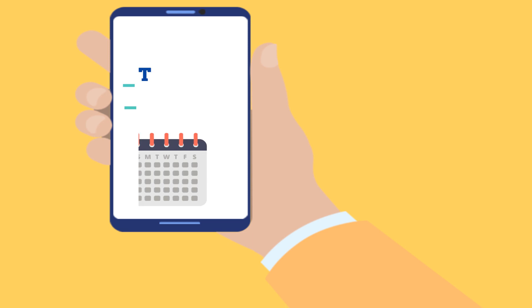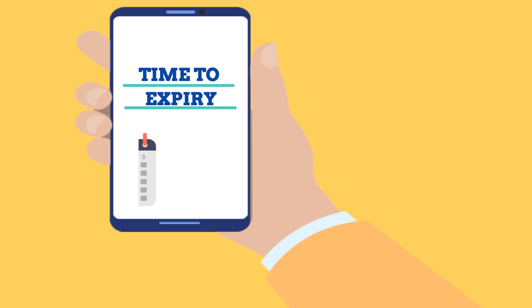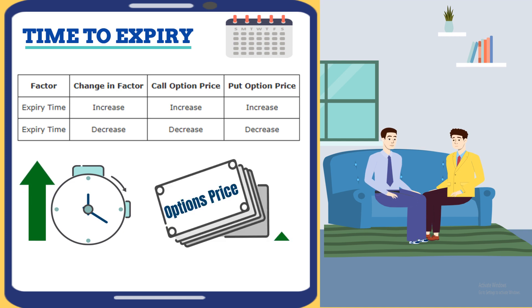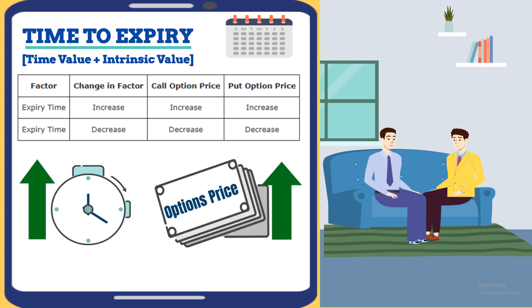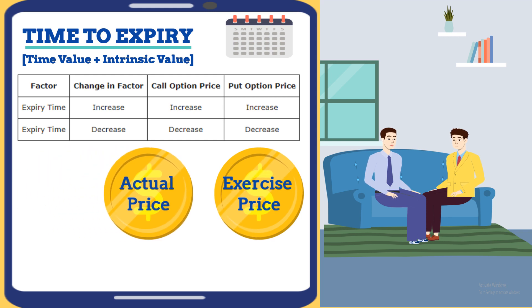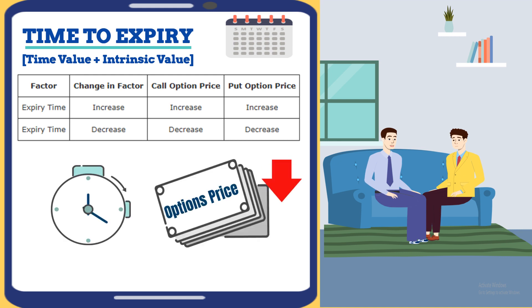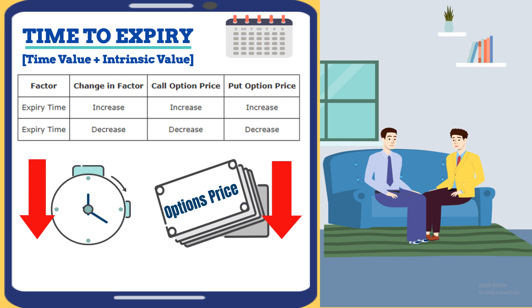What about time to expiry? The more time to expiry, the higher the price of the option. This is because more time means more chances of the actual price moving away from the exercise price. The value of an option goes down as it gets closer to its expiration. So the longer the time to expiry, the more expensive the option. That's good to know.